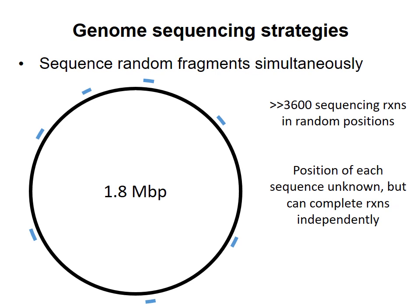This strategy of sequencing random fragments is called shotgun sequencing, after the way that shotgun shells contain many little pellets that scatter randomly when they hit a target.